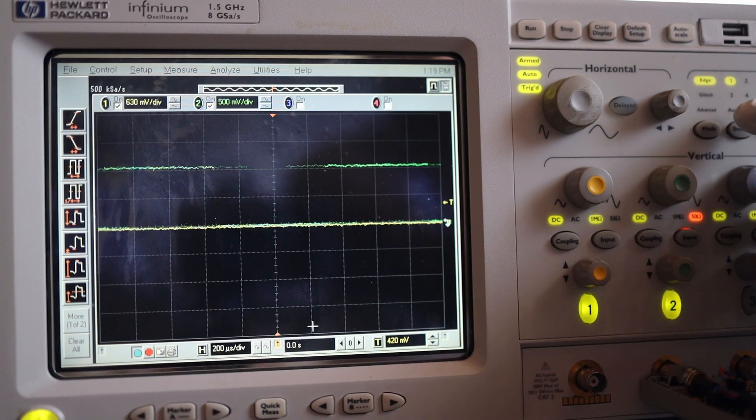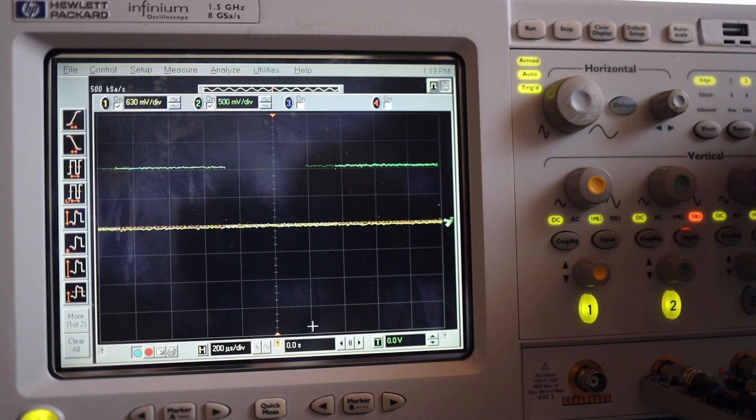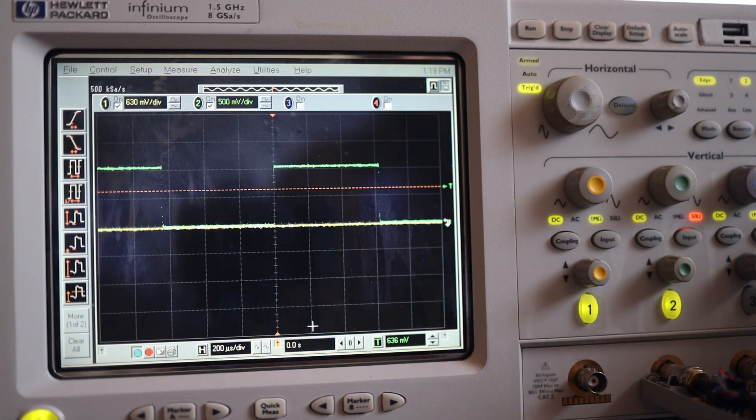The trigger point is connected to channel 1. So let's change the trigger to channel 2 and adjust the level. It detects perfectly fine. Works perfectly fine.